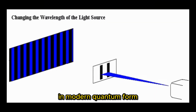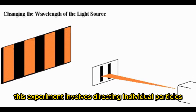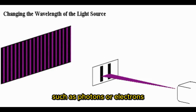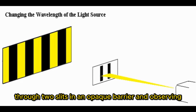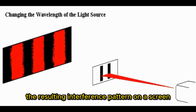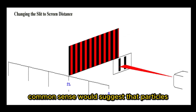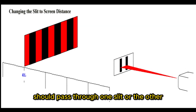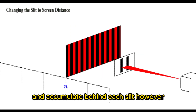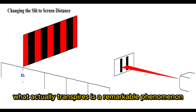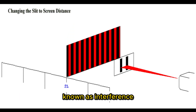In modern quantum form, this experiment involves directing individual particles, such as photons or electrons, through two slits in an opaque barrier and observing the resulting interference pattern on a screen. Common sense would suggest that particles should pass through one slit or the other and accumulate behind each slit. However, what actually transpires is a remarkable phenomenon known as interference.